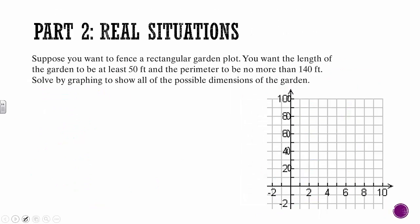So let's do a story. Suppose you want to fence in a rectangular garden plot. You want the length of the garden to be at least 50 feet and the perimeter to be no more than 140 feet. Solve by graphing to show all possible dimensions of the garden.